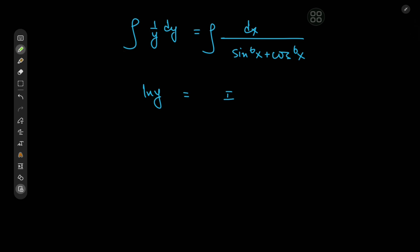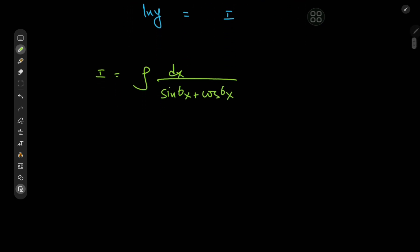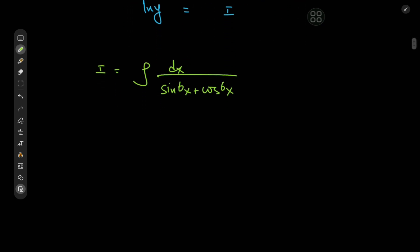So I is the integral of dx divided by sine to the sixth of x plus cosine to the sixth of x, and we need some simplification for the trig functions in the denominator.